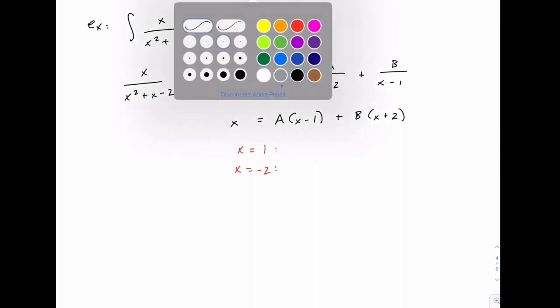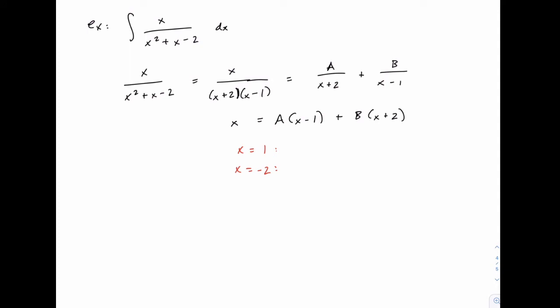When we plug in x equals 1, on the left side we get 1. On the right side, the a term drops off because x minus 1 is 0 and the b term is b times 3. So 1 equals b times 3, we can solve with one step by dividing by 3 and get b equals 1 third.